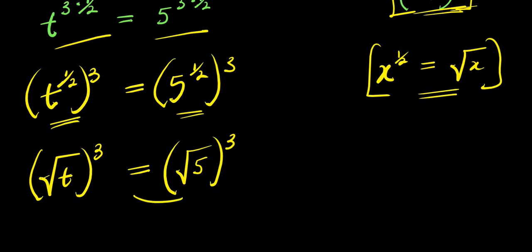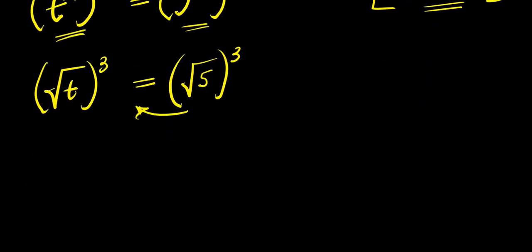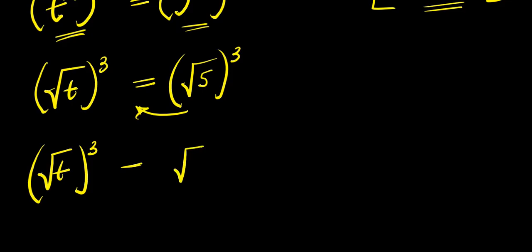Moving the right side over, we get the square root of t to the power of 3 minus the square root of 5 to the power of 3, and this equals 0.